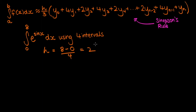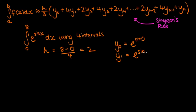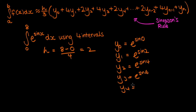Now let's work out the y terms. y0 is the function evaluated at the lower bound 0, so e to the sin(0). y1 is the function evaluated at 0 plus h, so at 2: e to the sin(2). y2 is evaluated at 0 plus 2h, which is 4: e to the sin(4). Following the pattern, y3 is e to the sin(6), and y4 is the function evaluated at the upper bound 8: e to the sin(8).